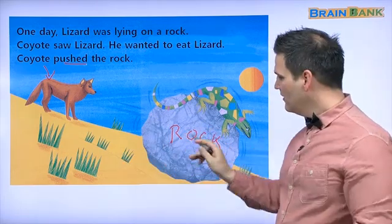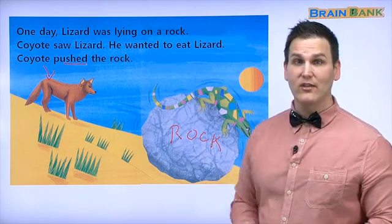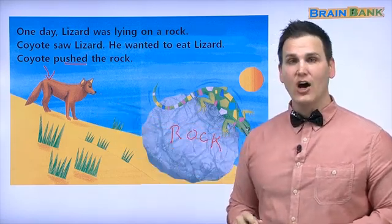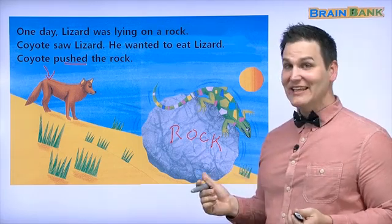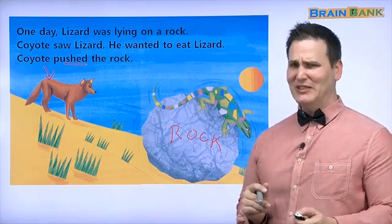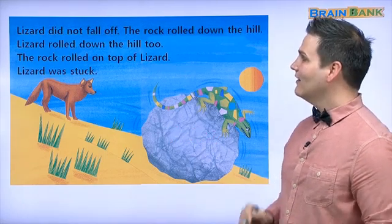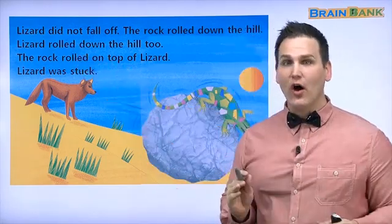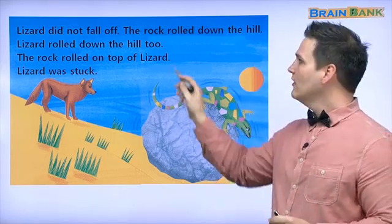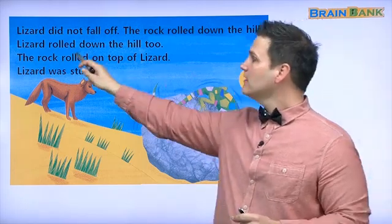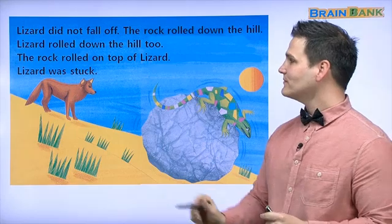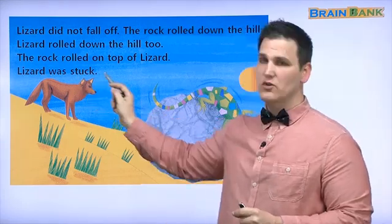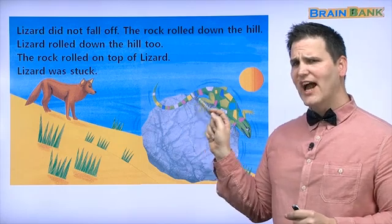Coyote pushed the rock and now lizard is going to roll down the hill — or roll down the sand dune. Coyote is very hungry! Let's see if coyote eats lizard. Let's read: 'Lizard did not fall off. The rock rolled down the hill. Lizard rolled down the hill too. The rock rolled on top of lizard. Lizard was stuck.'